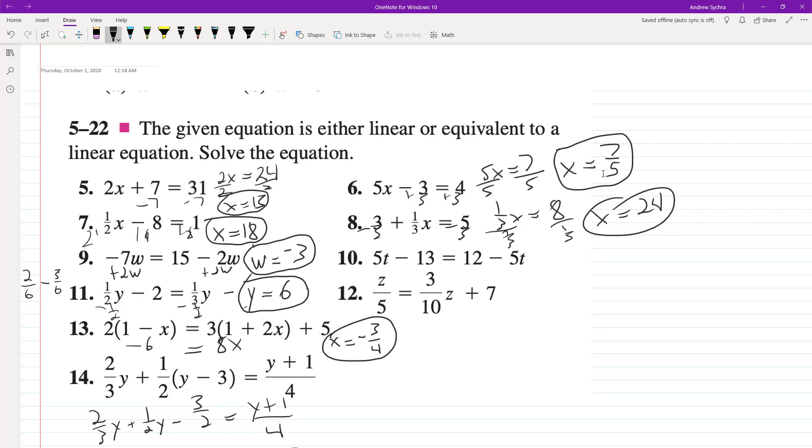Next up, same principle. Add 5t to both sides. t is equal to 5 over 2.